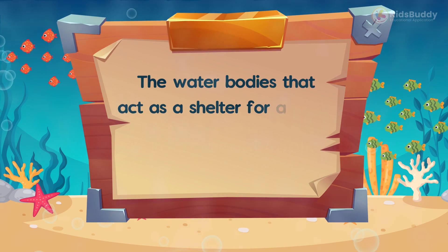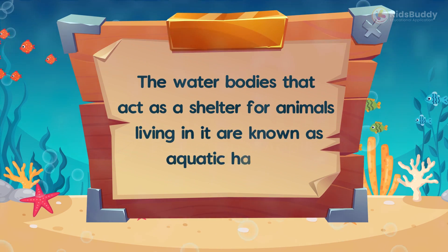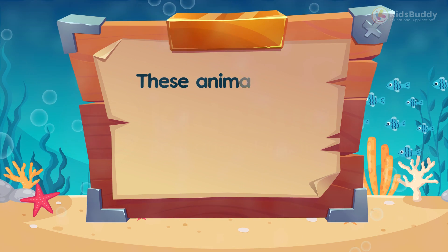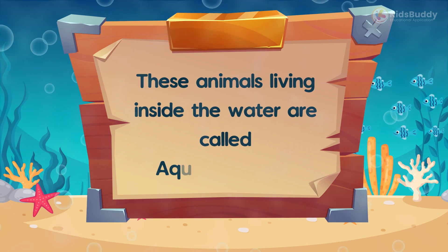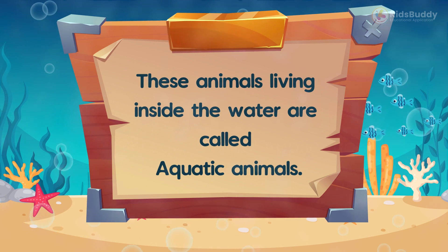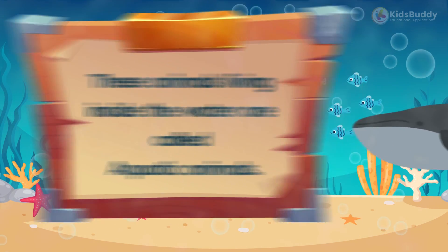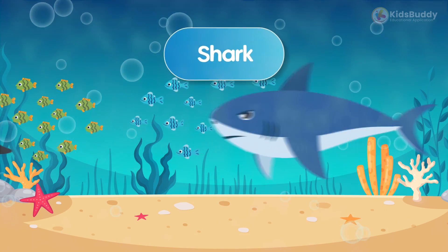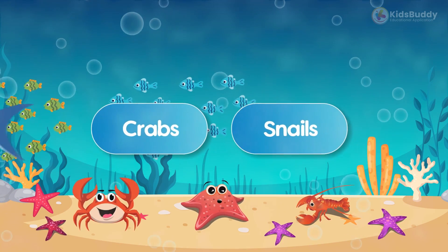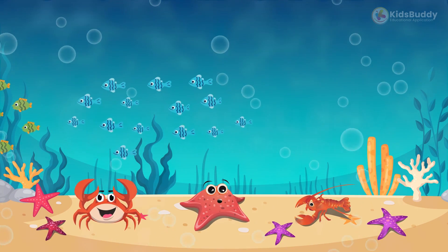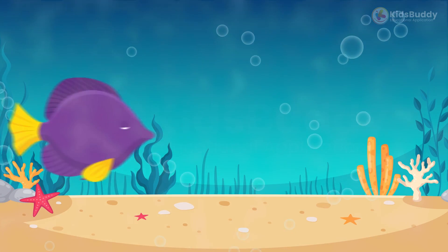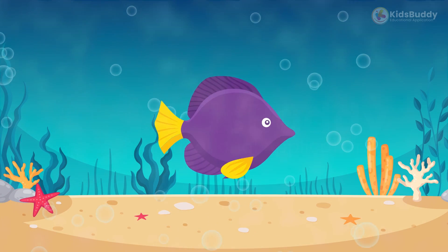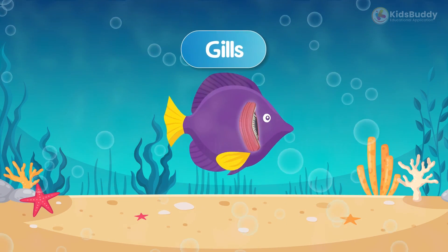The water bodies that act as a shelter for animals living in them are known as aquatic habitats. The animals living inside the water are called aquatic animals. It includes giant animals like whales and sharks, down to small creatures like snails and crabs. To survive underwater, many fish have special respiratory organs called gills.